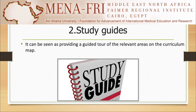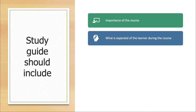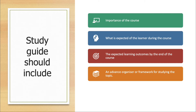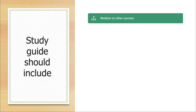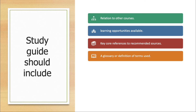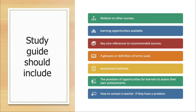The second tool is the use of study guides, which can be seen as providing a guided tour of the relevant areas of the curriculum map. A study guide pulls together all learners should know about a course, what is expected of them, and the learning opportunities available. A study guide should include: the importance of the course, what is expected during the course, expected learning outcomes, an advanced organizer or framework for studying the topic, and prerequisite knowledge and skills. It should also include relations to other courses, available learning opportunities, key core references, a glossary of terms, assessment methods, opportunities for self-assessment, and how to contact a teacher if there is a problem.